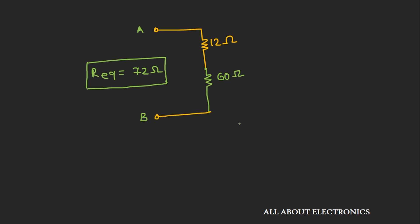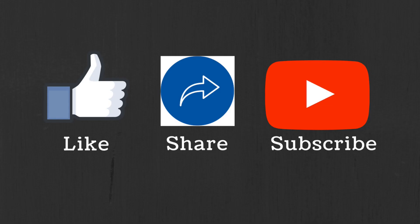So in this way, using the delta-to-star conversion, we can easily solve circuit problems. I hope in this video you understood what is delta network and star network, and how we can convert the delta network into the equivalent star network. If you have any question or suggestion, please let me know in the comment section below. If you like this video, hit the like button and subscribe to the channel for more such videos. Thank you.